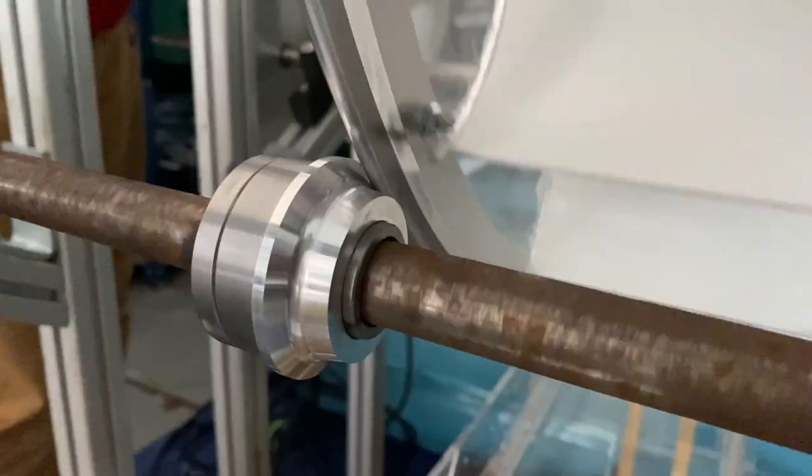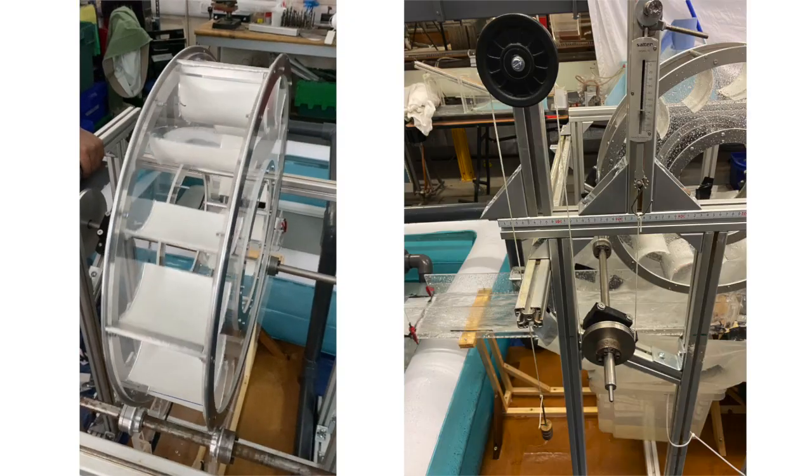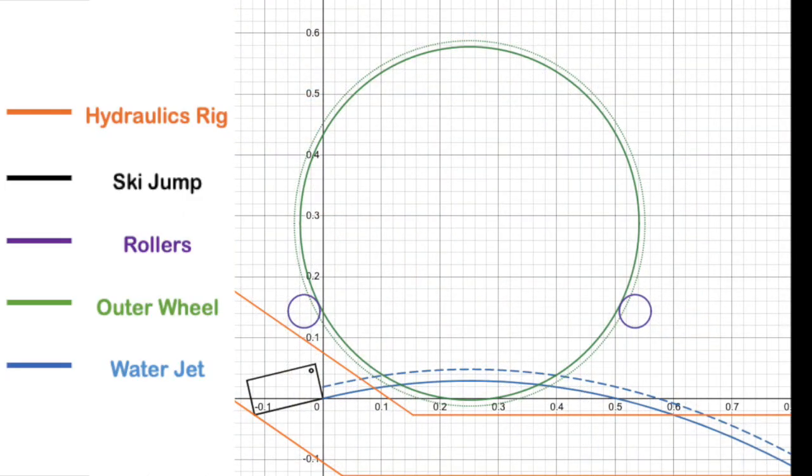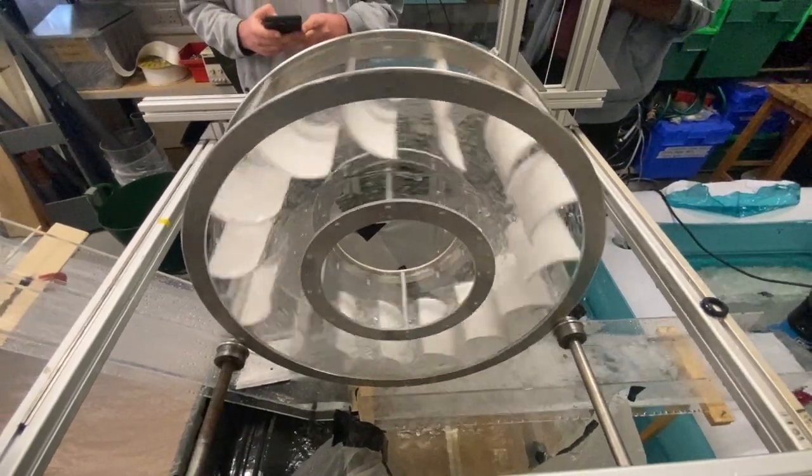The support structure was also erected at the same time, supporting all elements of the wheel and power take-off system. The position of the center of the wheel and rollers to the ski jump was established using theory and graphical software. We could then begin to test the wheel.